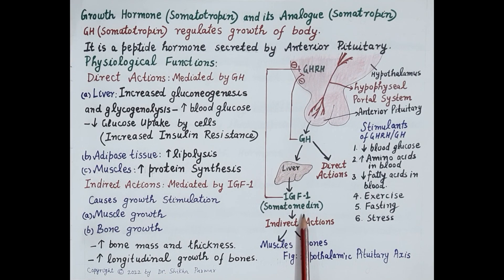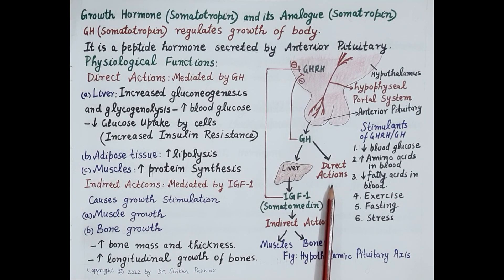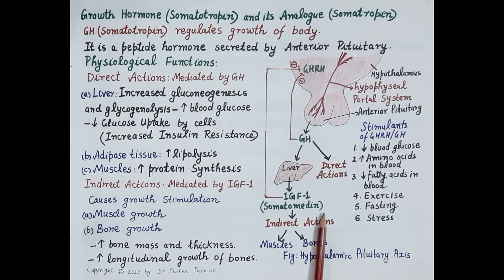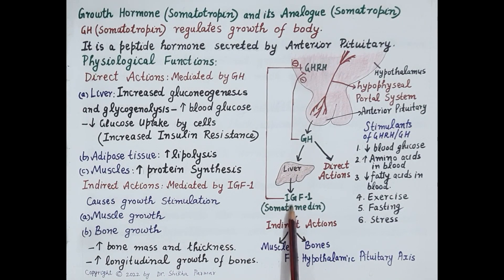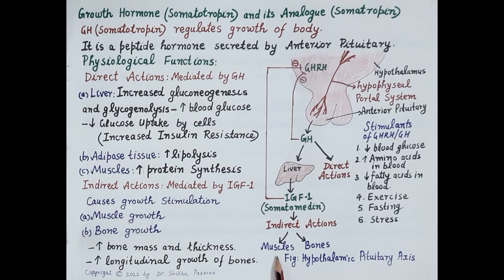Growth hormone regulates growth of the entire body through direct actions as well as indirect actions. Direct actions are the actions of growth hormone itself, while indirect actions are mediated by IGF-1. The main function of IGF-1 is to stimulate growth of skeletal muscles and bones. IGF-1 increases muscular strength, induces increase in bone mass, thickening of the bones, and increase in the length of bone, thereby increasing the height of the individual.